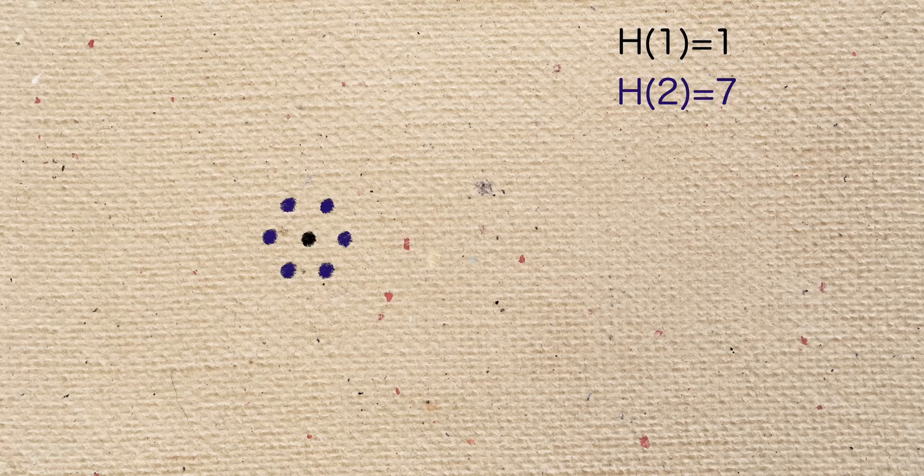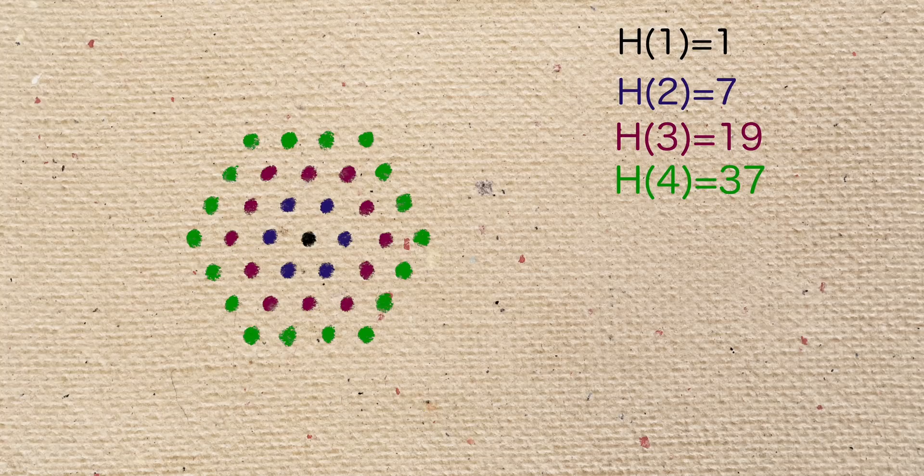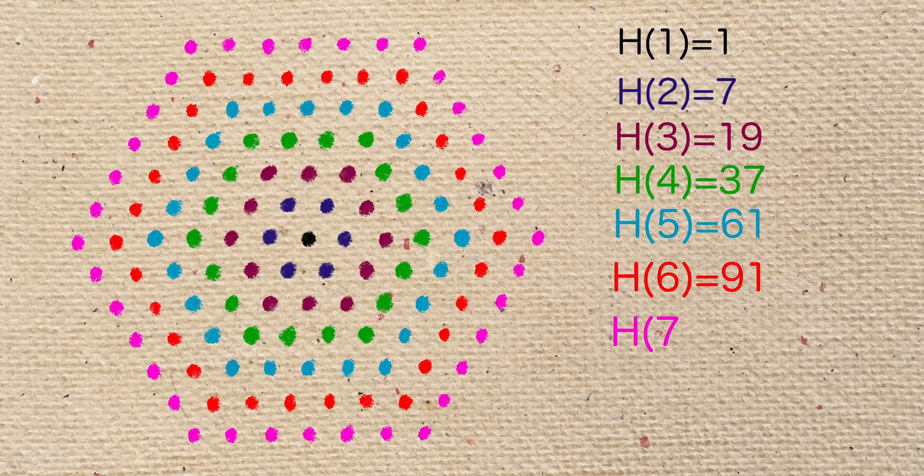After the first centered hexagonal number of 1, the second is 7, the third is 19, the fourth is 37, the fifth is 61, the sixth is 91, and the seventh is 127.